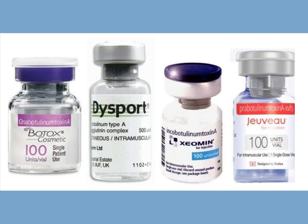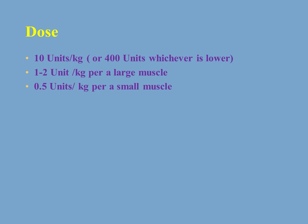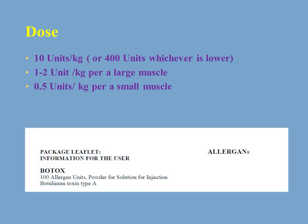There are several commercially available botulinum toxin products. By far the most common is Botox by Allergan, which comes in a vial of 100 units. The usual dose is 10 units per kg or 400 units, whichever is lower. I usually recommend 1 to 2 units per kg for large muscles such as gastrocnemius or hamstrings, and 0.5 units per kg for small muscles such as upper limb muscles. Always check the package leaflet for any changes.